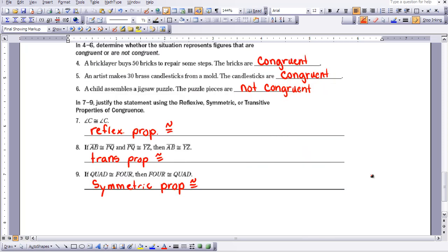In 7 through 9, we wanted to use one of the properties of congruence to justify the statement that's being made. We know that two figures, if an isometry has been performed, would be congruent. The same figure, this C, would be congruent to C. So that's the reflexive property.